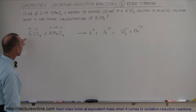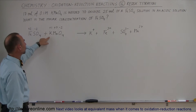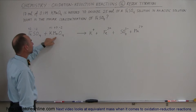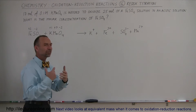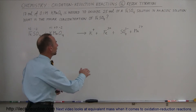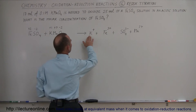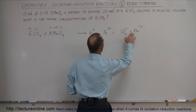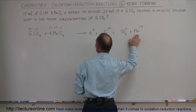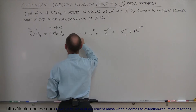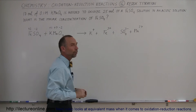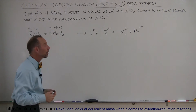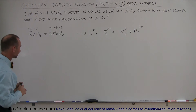Here's the basic reaction. You have iron sulfate and potassium permanganate, and then they will be dissociated because of the acidic solution into potassium ions, iron ions, sulfate ions, manganese ions, and of course we still have oxygen remaining — we'll see in just a moment what we need to do to equalize that oxygen.